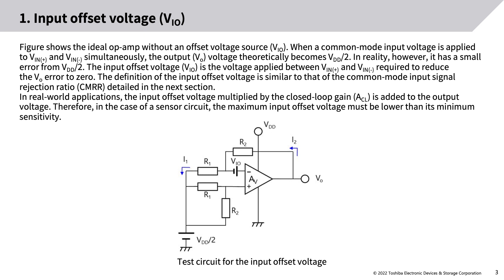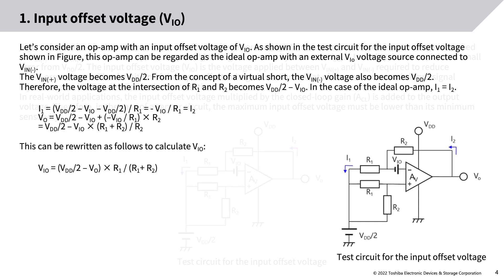The input offset voltage VIO is the voltage applied between VIN+ and VIN− required to reduce the VO error to zero. In real-world applications, the input offset voltage multiplied by the closed-loop gain ACL is added to the output voltage. Therefore, in the case of a sensor circuit, the maximum input offset voltage must be lower than its minimum sensitivity.